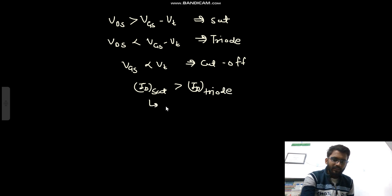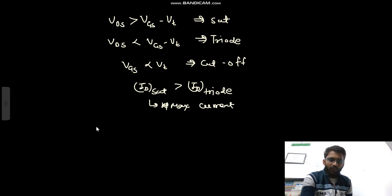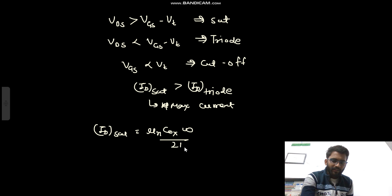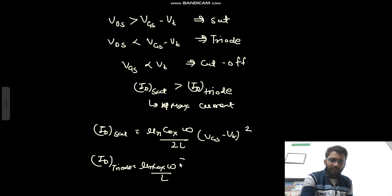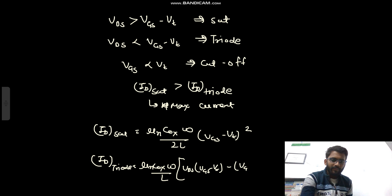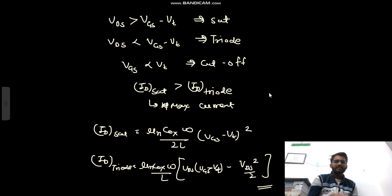The current in the saturation region is always greater than the current in the triode region — it is the maximum current. The formula for saturation current is mu_n*Cox*(W/2L)*(VGS - Vt)^2, and the formula for triode region current is mu_n*Cox*(W/L) * [VDS*(VGS - Vt) - VDS^2/2].